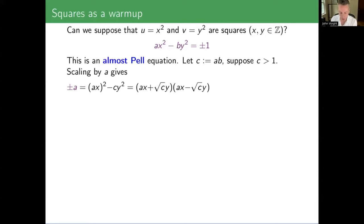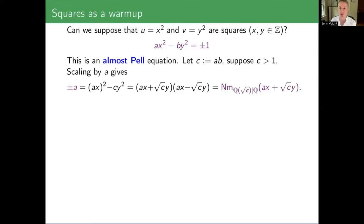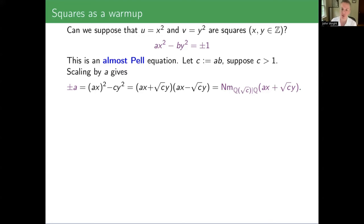Why do I say an almost Pell equation? Just like in the Pell equation, you can factor this as the difference of two squares over the field where you adjoin the square root of C. Another name for this type of equation would be that it's a norm equation — the norm here is from the field Q adjoin √C. The left-hand side is a binary quadratic form, so it should be related to quadratic forms with discriminant C.